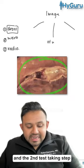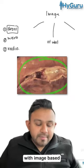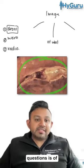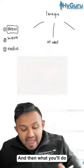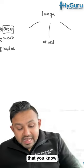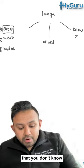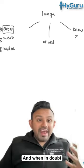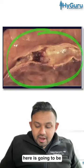The second test-taking step I like to take with image-based questions is: of what is it? In this case, it's of the coronary. Then you look for things that you know, look for things that you don't know, and when in doubt, look for asymmetry in the image.